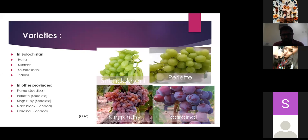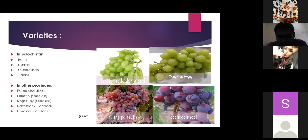The varieties that are grown in Pakistan, in Balochistan and in other provinces, include seedless and seeded varieties. Among seedless varieties are Carly, King's Ruby, NARC Black, and Cardinal.